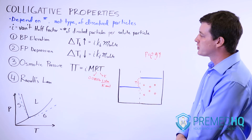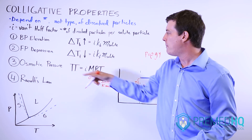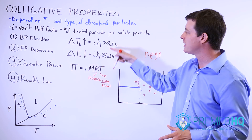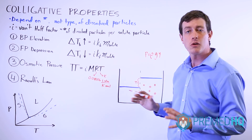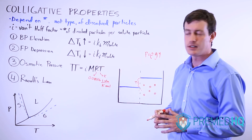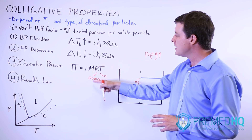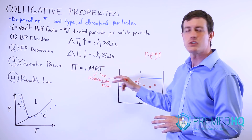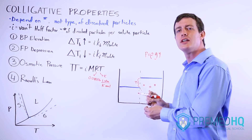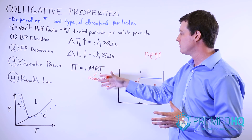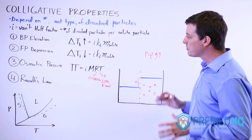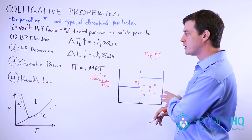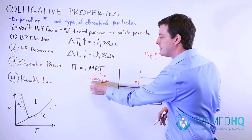Osmotic pressure, depicted by the symbol π, equals the Van't Hoff factor times molarity times R times temperature in Kelvin — where R is the gas constant in units of liters times atmospheres per Kelvin per mol, equal to 0.08206, which can be simplified as 0.0821. Note that boiling point elevation and freezing point depression use molality, while osmotic pressure uses molarity. The R value will typically be given to you on an exam, but the formula π = iMRT should be committed to memory.